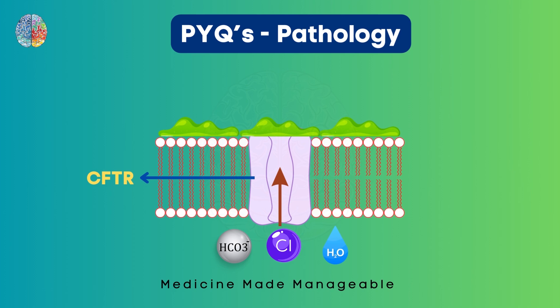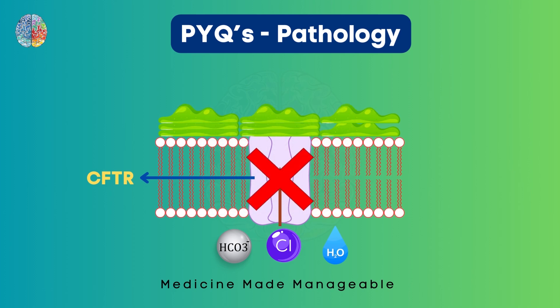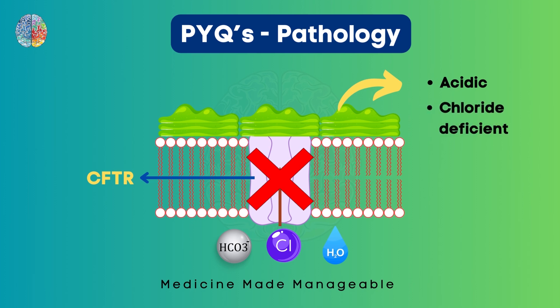But in this disease, the CFTR is not working. Due to this, the mucus will become acidic because bicarbonate is not able to go through. It will be chloride deficient and also very importantly, the mucus will become very thick because the water content will be low.